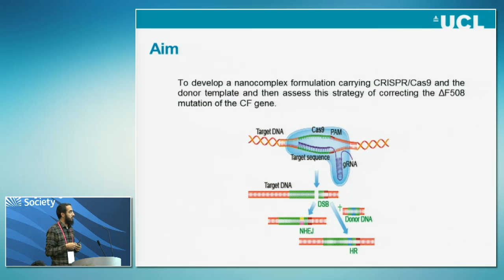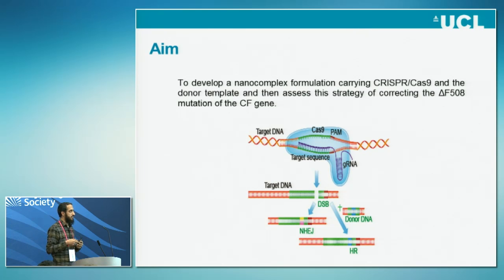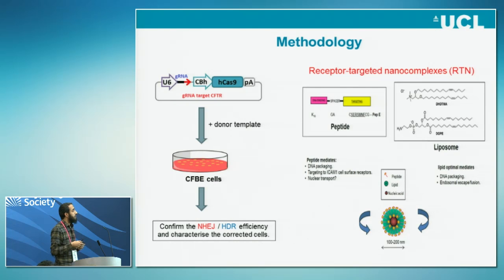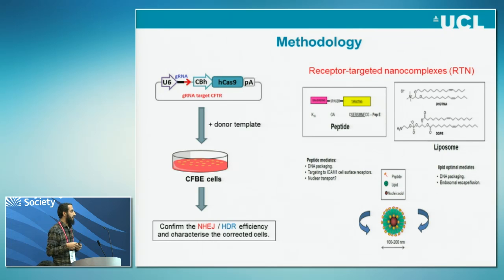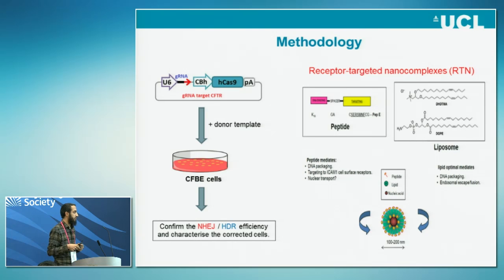So in this project, we are aiming to explore the potential of CRISPR-Cas9 as a therapy for cystic fibrosis, using the donor template for correction. We are targeting the CFTR near the delta-F508 mutation, using the donor template for correction, targeting CFB cells — either a cell line or moving later to primary cells. We also need to confirm the homologous and non-homologous recombination efficiency and characterize the correction.